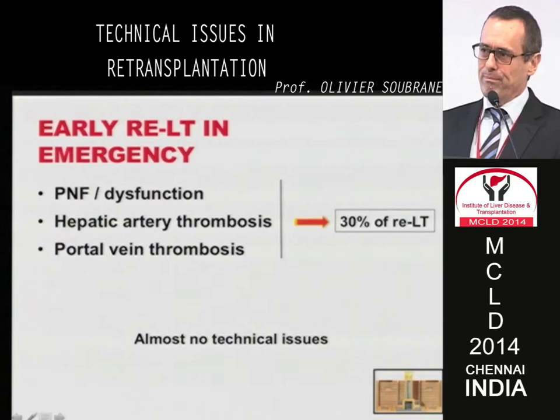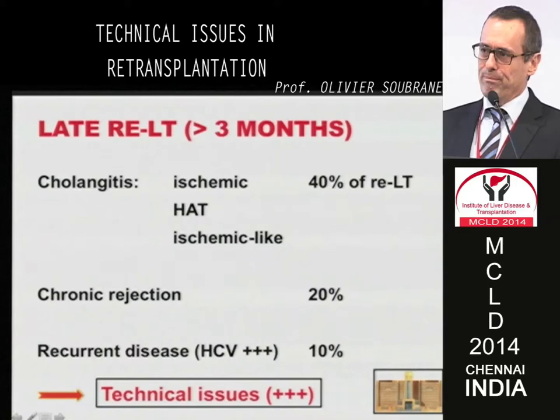Early re-transplantation is probably easier than delayed re-transplantation. The main etiologies for early re-transplantation are primary non-function, hepatic artery thrombosis, and portal vein thrombosis — representing 30% of re-transplantations. More difficult are late re-transplantations, more than three months after primary transplantation, due to ischemic cholangitis, hepatic artery thrombosis, or ischemic-like cholangitis — representing 40% of re-transplants — as well as chronic rejection and recurrent disease, especially hepatitis C virus.